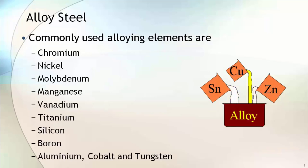Commonly used alloying elements are chrome, nickel, molybdenum, manganese, vanadium, titanium, silicon, boron, aluminum, cobalt, and tungsten.